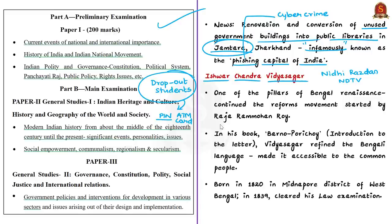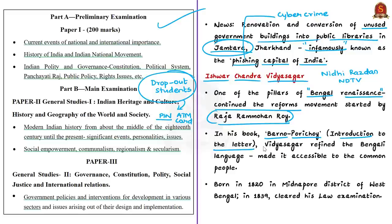Let us discuss briefly about Ishwar Chandra Vidya Sagar and his contributions. He is considered one of the pillars of the Bengal Renaissance, continuing the reform movement started by Raja Ram Mohan Roy. Vidya Sagar was a well-known writer, intellectual, and a staunch follower of humanity. He is known for bringing a revolution in the education system of Bengal. He wrote a book called Barna Parichay, translated as Introduction to the Letter, where he refined the Bengali language and made it accessible to the common strata of society. Because of his vast knowledge in almost all subjects, he was given the title Ocean of Knowledge, translated as Vidya Sagar.